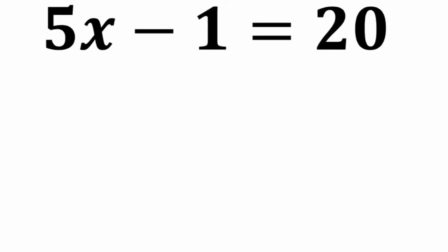Okay, so let's solve this. We have 5 times x minus 1 equals 20. This is a two-step equation, and I want to know what the variable x is equal to.